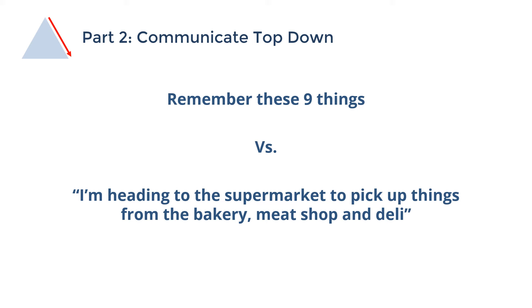But if we're thinking about part two, we then go to communicate top down. And this principle is really about shifting away from here's these nine things you need to remember. It's hard for people to do that, to what are the key takeaways? What are the key ideas? And the key ideas, the main idea, is that you're heading to the supermarket to pick up some things.